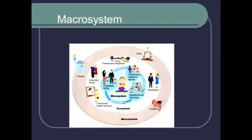One more level out brings us to the macrosystem. The macrosystem includes the larger social and cultural context — things like the laws of a country, and the values and customs. As an example, the No Child Left Behind law was passed about a decade ago in the United States. If you were a child who went to school before that law, your experience at school was significantly different than if you went to school after it. So the law leads to different developmental experiences and even different developmental outcomes.